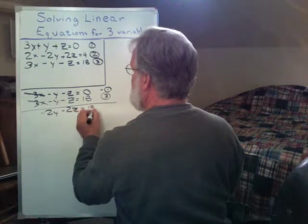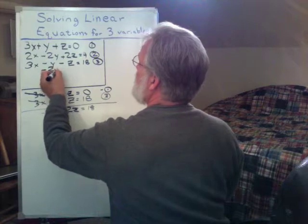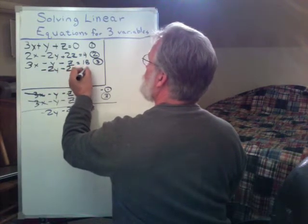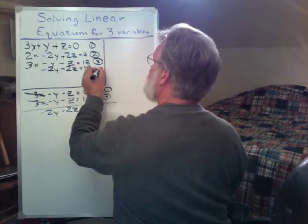And that equals 18. And that's going to be my equation four. So minus 2y minus 2z equals, excuse me, equals 18. And that's simply equation number four.